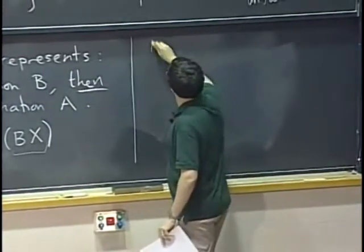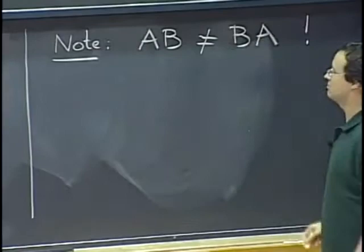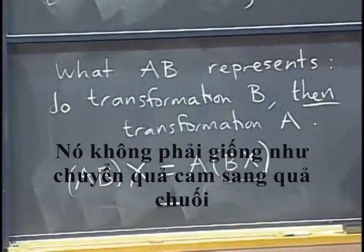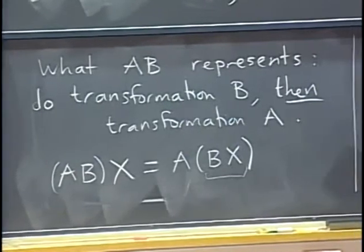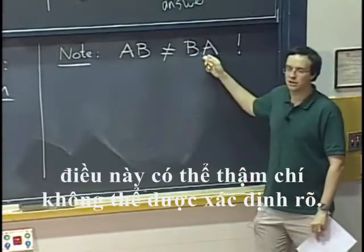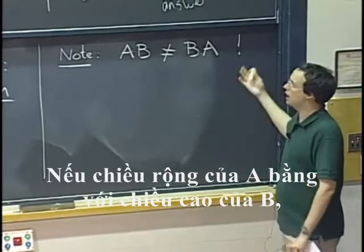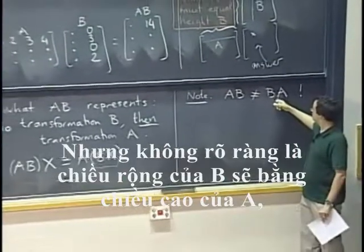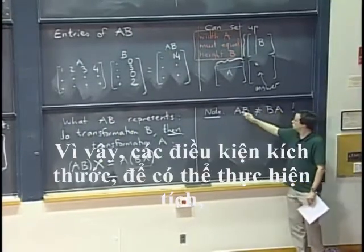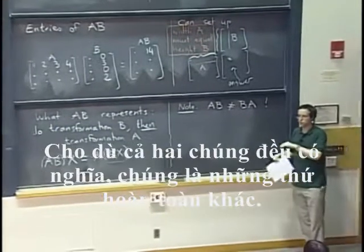Another note of warning: AB and BA are not the same thing at all. You can see that from the interpretation — it's not the same thing to convert oranges to bananas then to carrots, or vice versa. Even worse, one of them might not even be well-defined: if the width of A equals the height of B, we can do this product. But it's not clear that the width of B would equal the height of A, which is what we would need for BA. So the size condition might not be satisfied, and even if both products make sense, they are usually completely different things.